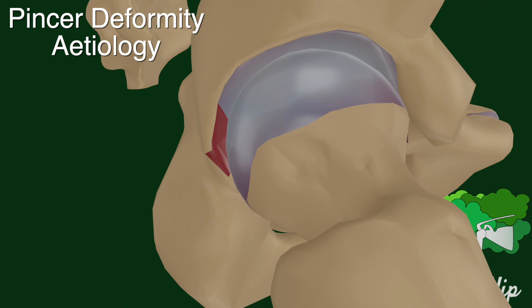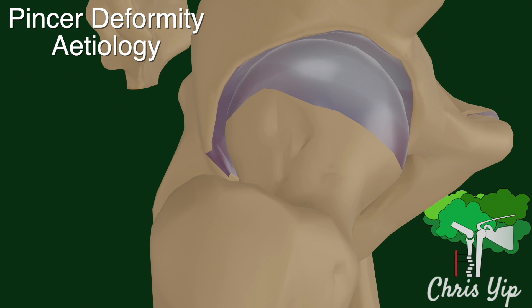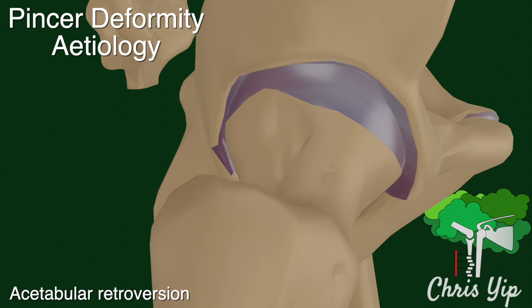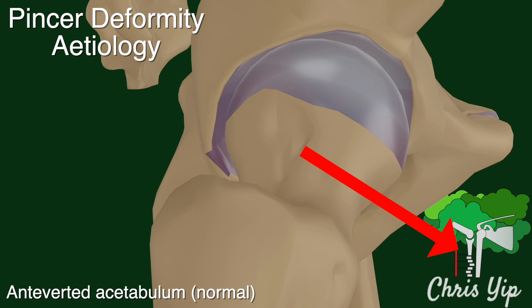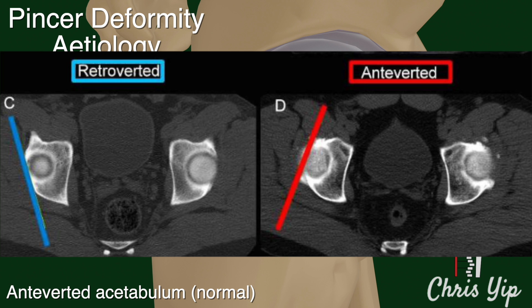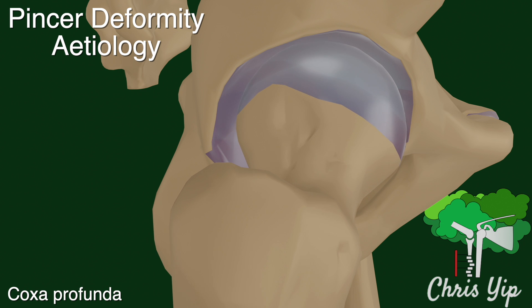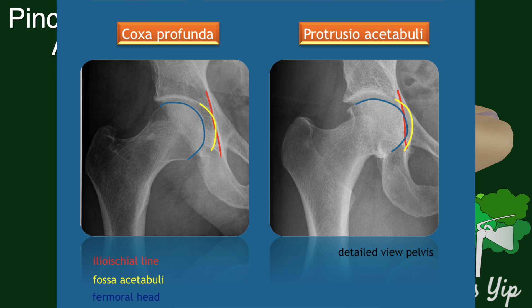This overcoverage of the acetabulum can be due to different causes, such as acetabular retroversion, meaning the acetabulum is pointing posteriorly, whereas in normal acetabulums it points anteriorly, known as an anteverted acetabulum. It can also be due to a coxa profunda, which is a deep acetabular pocket causing the proximal femoral head to be situated further into the pelvis, or the more severe version known as protrusio acetabuli.